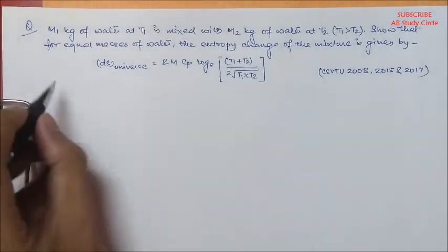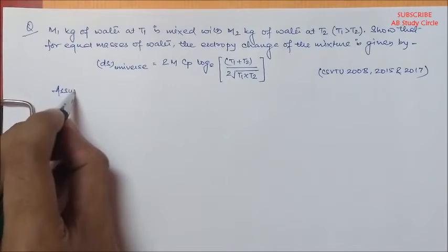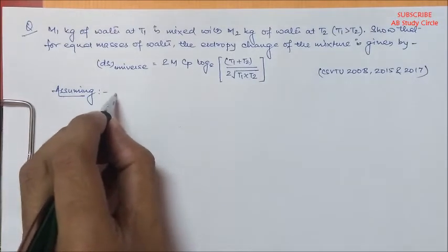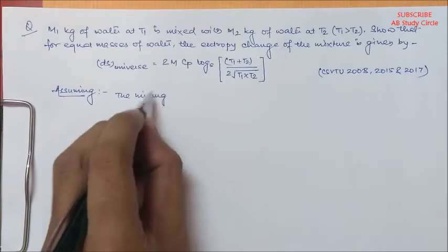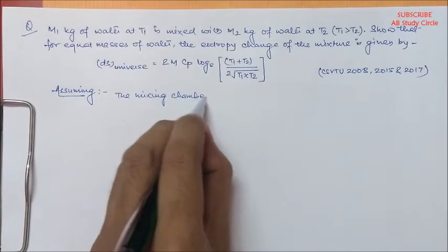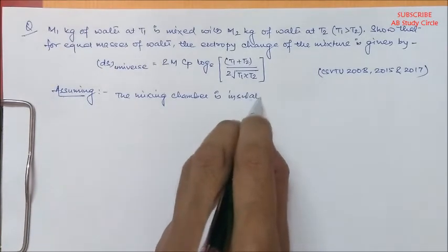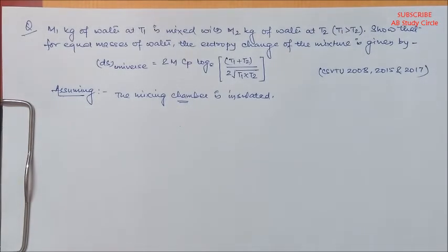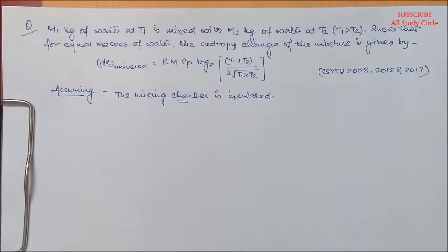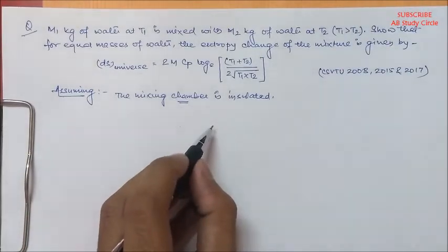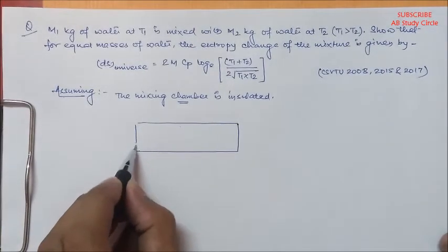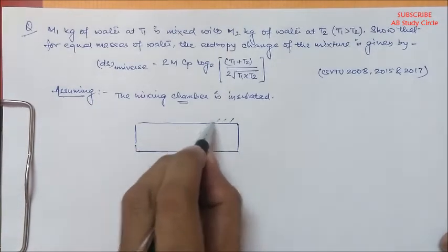Before starting the question, let's assume that the whole system is insulated — that is, assuming the mixing chamber is insulated. This is not given in the question, so we have assumed this. Otherwise, if it is given in the question, you don't have to assume this point. So let's draw the diagram according to the question to get a clear picture of the problem. This is your mixing chamber.